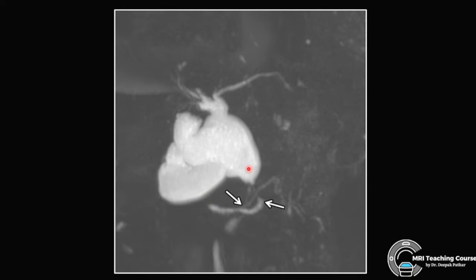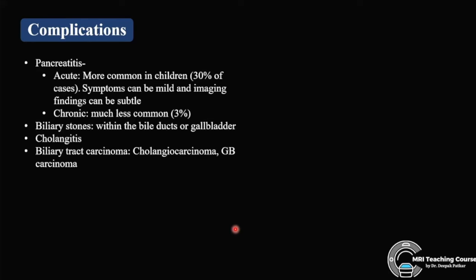Type D is complex maljunction — associated with pancreatic divisum and other complicated duct systems, where both choledochal cyst and pancreatic divisum are present. Complications of these ductal anomalies are mainly pancreatitis (acute and chronic), gallstones, cholangitis, and biliary tract carcinomas.